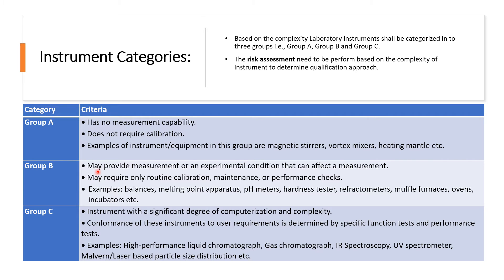Now Group B. Group B instrument equipment may provide a measurement or an experimental condition that can affect a measurement — meaning there should be some kind of reading or results, so it will generate some kind of data. Group B equipment may require only routine calibration, preventive maintenance, or performance checks. Examples of Group B instruments include balance, melting point apparatus, pH meters, hardness testers, refractometers, buffer furnaces, ovens, incubators, etc.